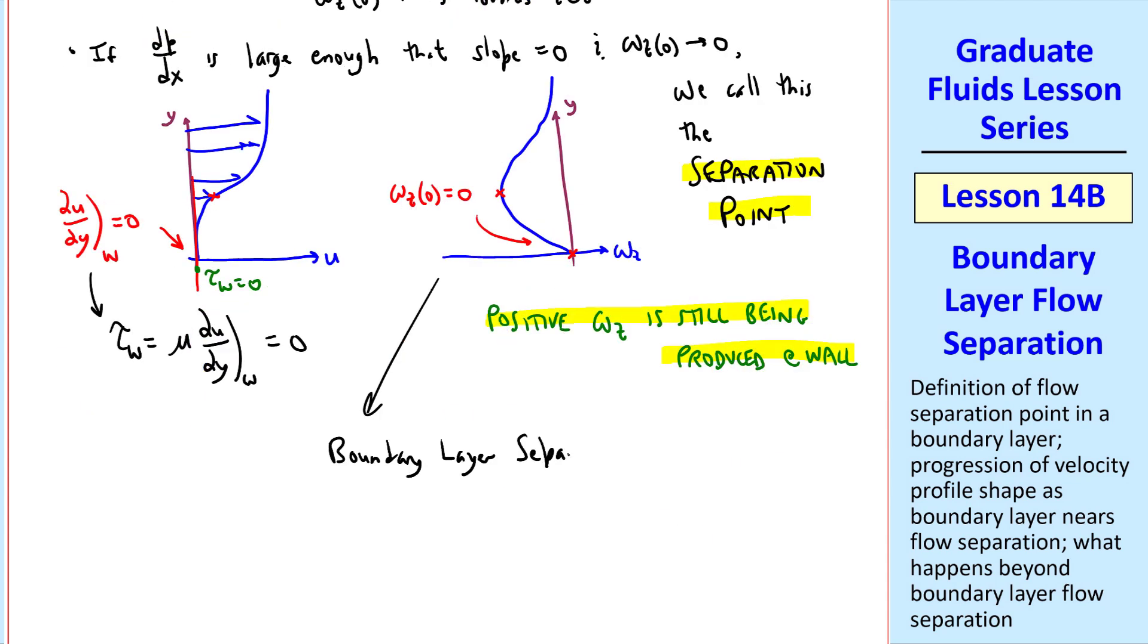When this happens, we say that there is boundary layer separation, where the boundary layer lifts up off of the wall.